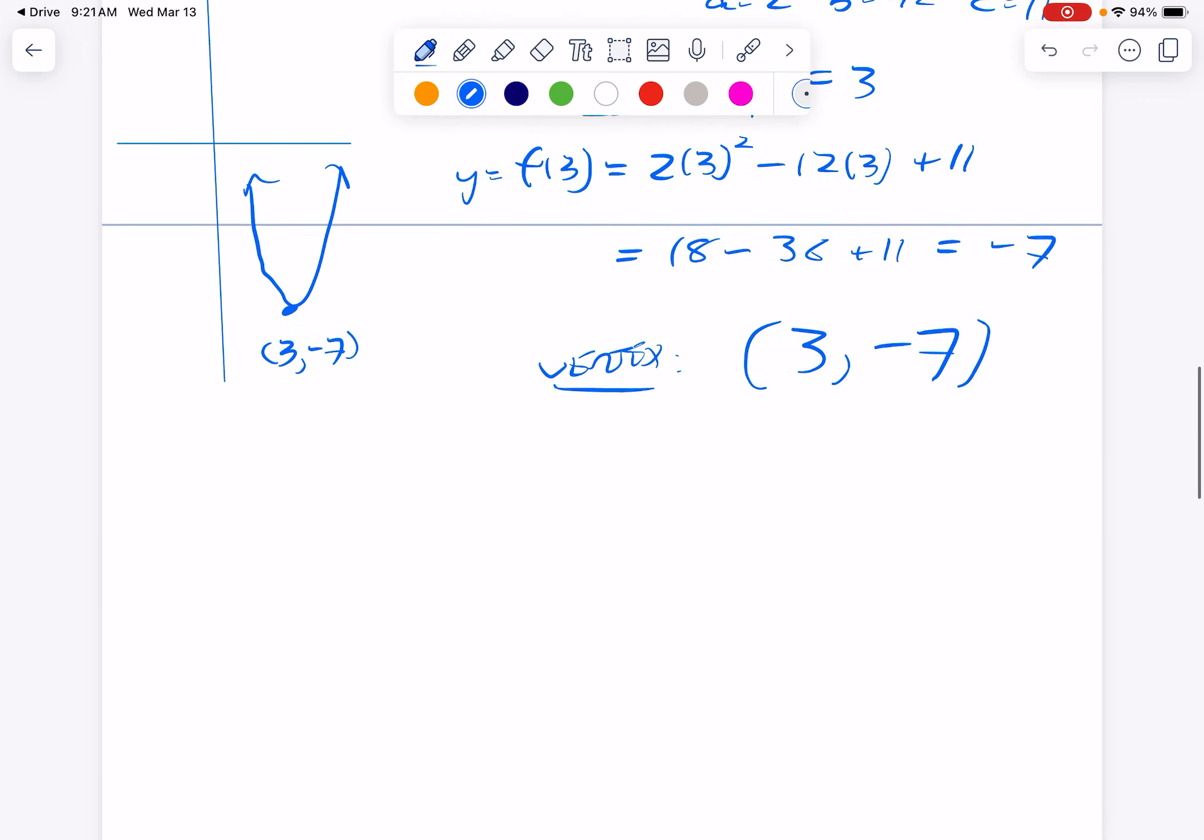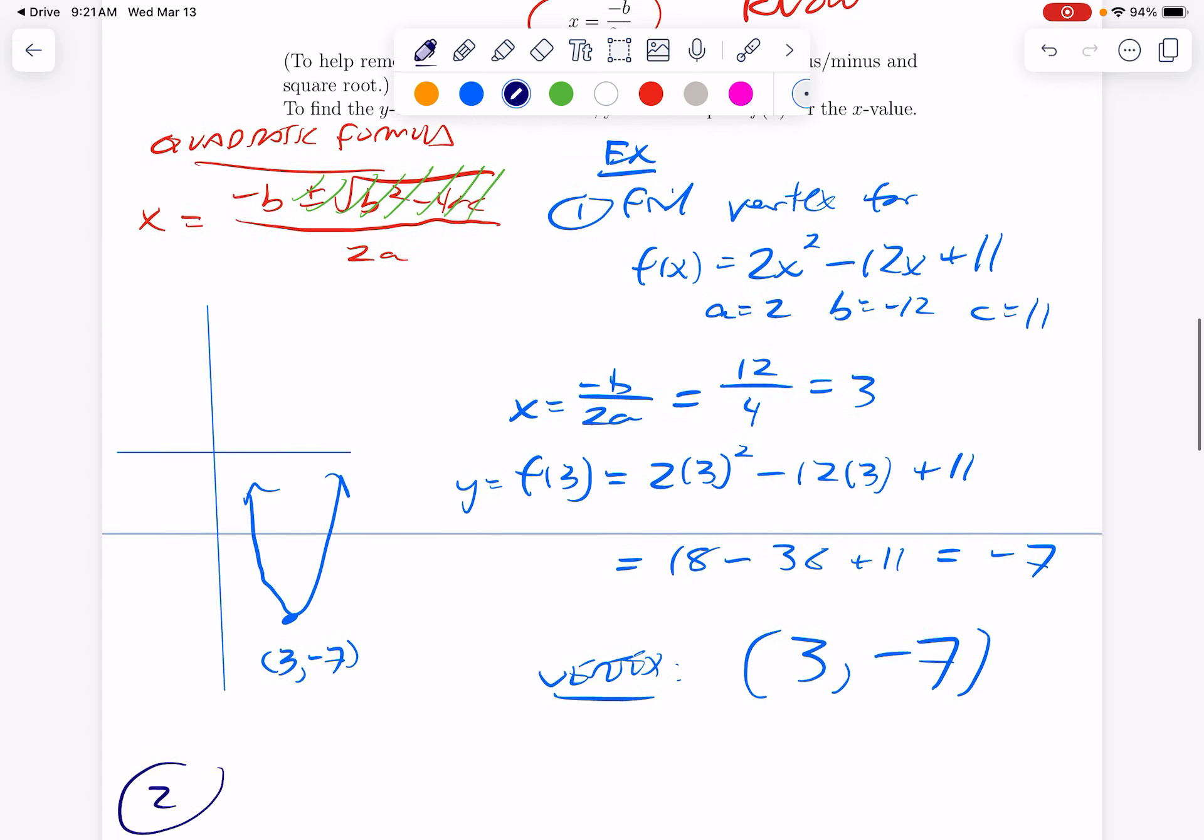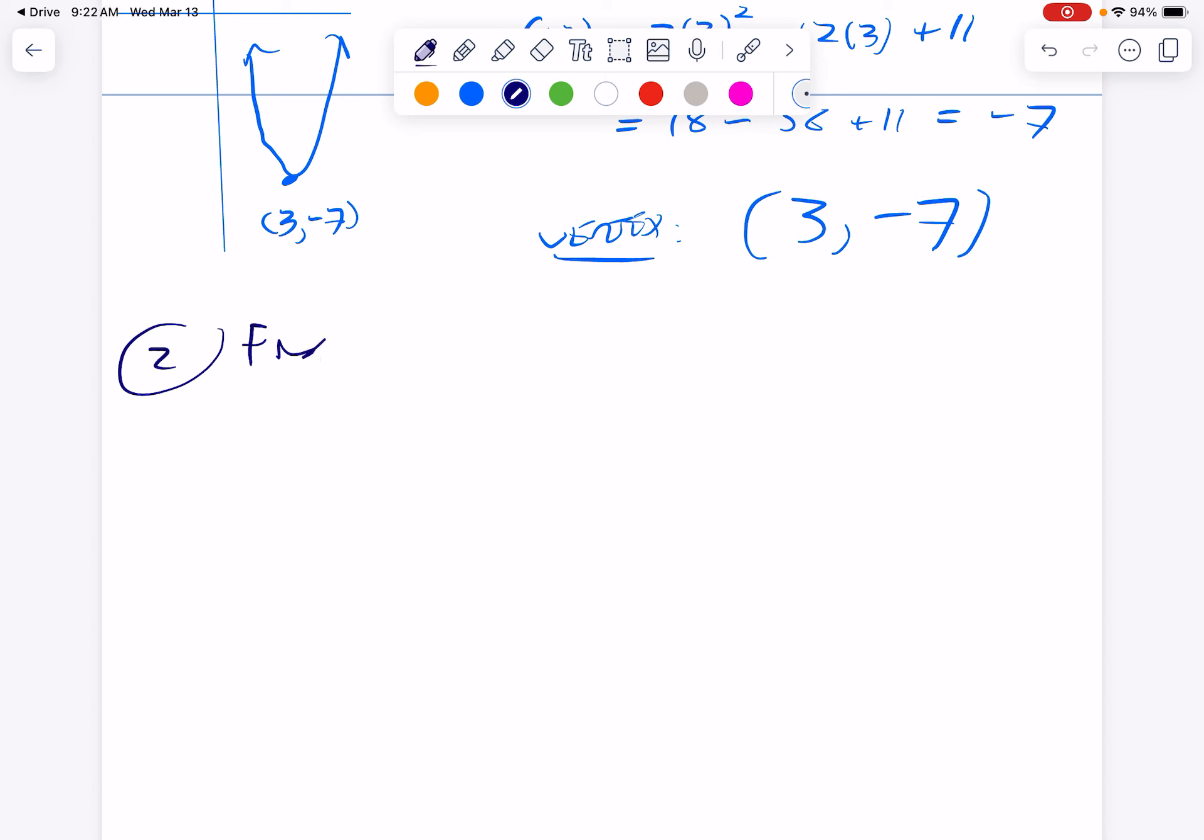Let me try another one, and then hit pause and do this yourself if you're watching the video. Find the vertex for, let's say g of x is 1 half x squared plus 3x plus 1. Okay, hopefully you've done that.